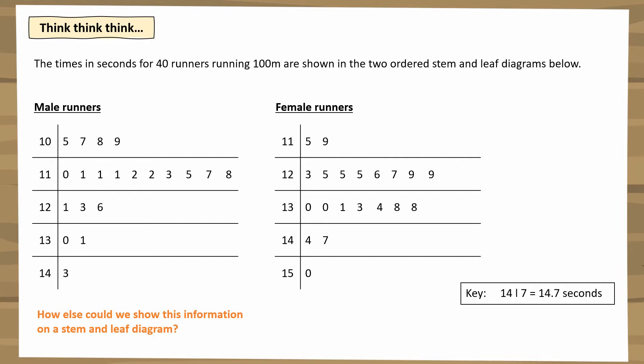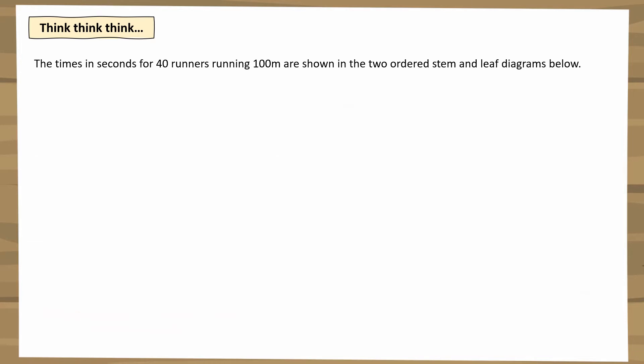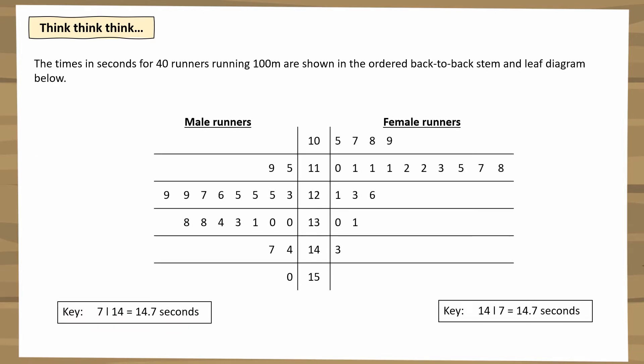Instead of having two separate stem and leaf diagrams showing virtually the same information about runners running 100 meters, we put it all together but split male and female. The way we do this on a stem and leaf diagram is to draw a back-to-back stem and leaf diagram.